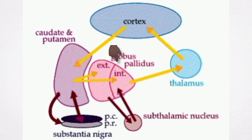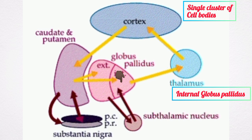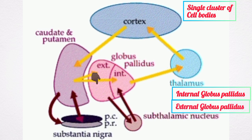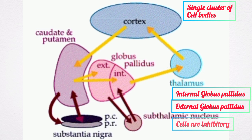The globus pallidus is a single cluster of cell bodies. It is made up of the internal globus pallidus, also known as the globus pallidus internus, and the external globus pallidus, also known as the globus pallidus externus. The cells in the globus pallidus are inhibitory in nature.